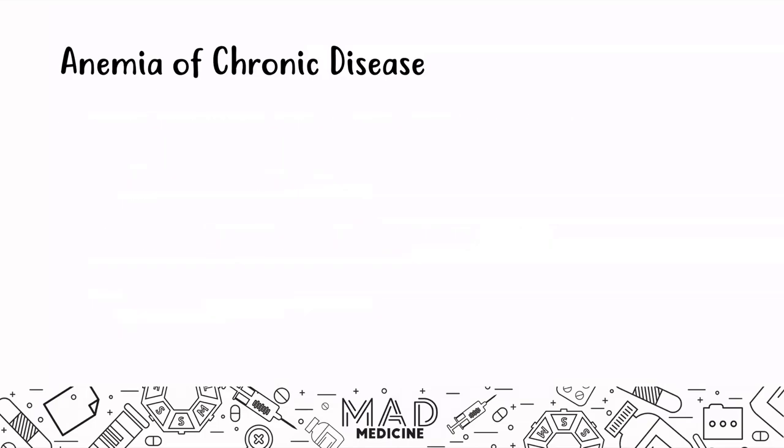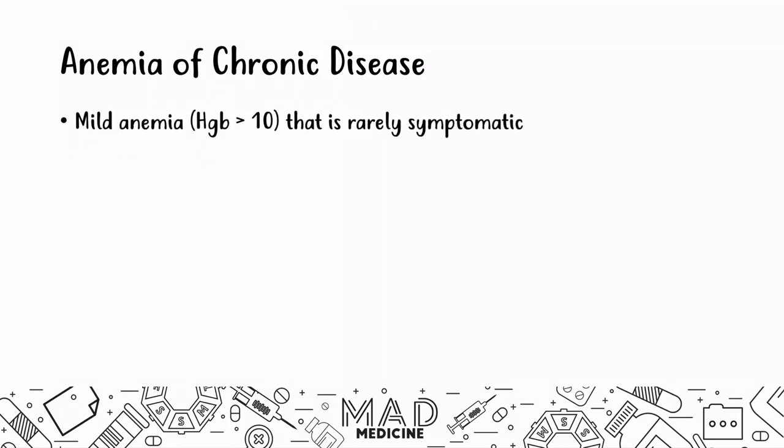Anemia of chronic disease presents with very mild anemia — hemoglobin less than 10 — and is rarely symptomatic. You will notice it on a CBC, but the patient isn't going to show symptoms of severe anemia or decreased oxygen delivery. This is all going to be driven by cytokines, since this is a chronic disease state producing a lot of cytokines.